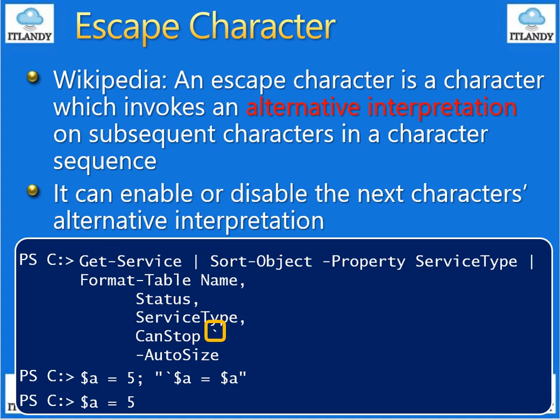Escape character. An escape character is a character which invokes an alternative interpretation on subsequent characters in a character sequence. It can enable or disable the next character's alternative interpretation. Escape characters are used to assign special interpretation to the characters that follow. In Windows PowerShell, the escape character is the backtick, also called the grave accent.